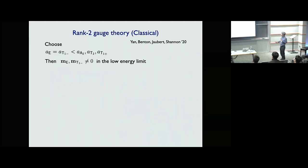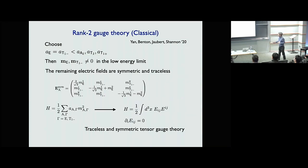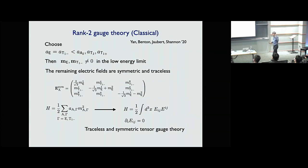By tuning the exchange interaction parameters such that two modes are degenerate and are the lowest energy modes, we can keep only the symmetric part of the rank-2 electric field tensor. The model then becomes a traceless symmetric tensor gauge theory with a Gauss law constraint, which many in the fractons field like to work with. This can be achieved simply by turning off Kitaev and Gamma interactions — keeping only Heisenberg and DM interaction. This regime is not difficult to achieve.